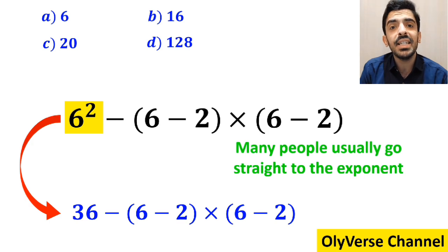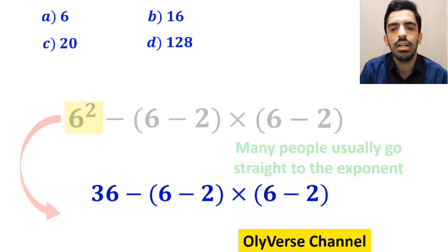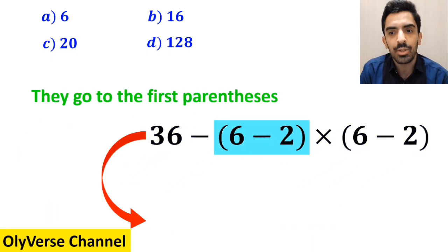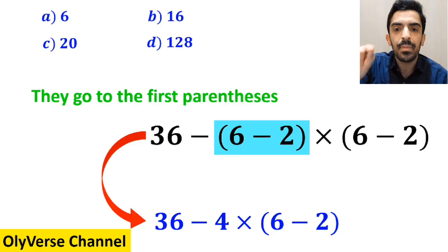36 minus (6 minus 2) times (6 minus 2). Then they go to the first parenthesis and instead of this expression they write 36 minus 4 multiplied by (6 minus 2).